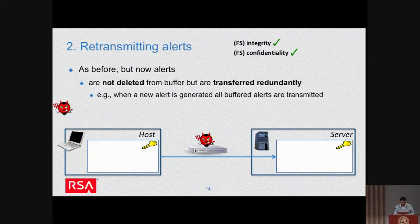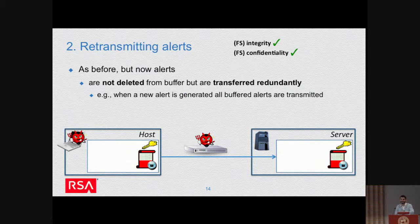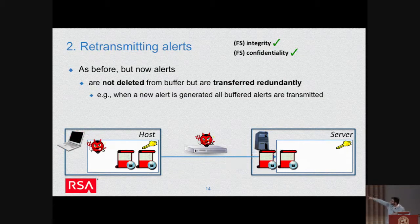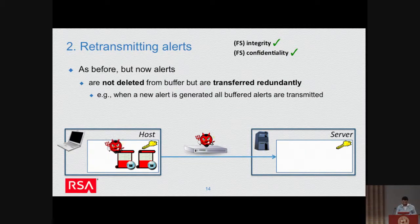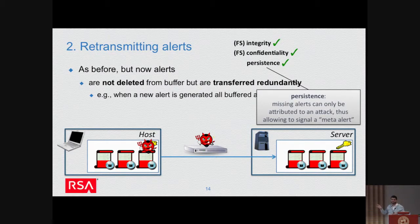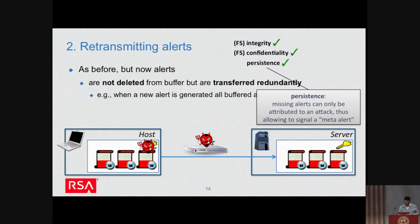The next step in our bottom-up design is to be more redundant in our transmissions — we do not empty the buffer but transmit everything we have. This means that in the next step of the attack where we have a second alert, the first one keeps being transmitted to the server, and so on. We add redundancy to the system, and this gives us persistence: even if we have benign network problems we guarantee that a given alert is more likely to be received by the server.